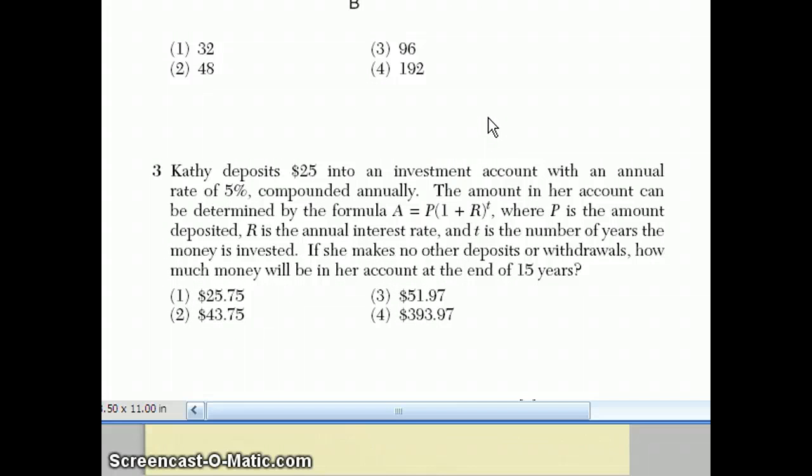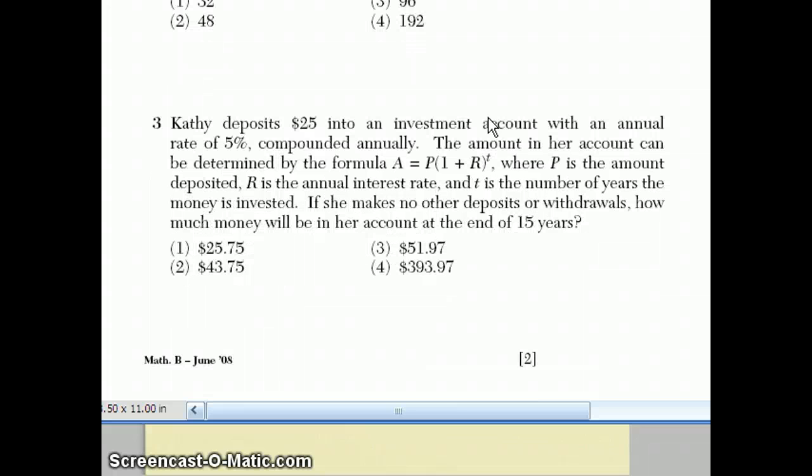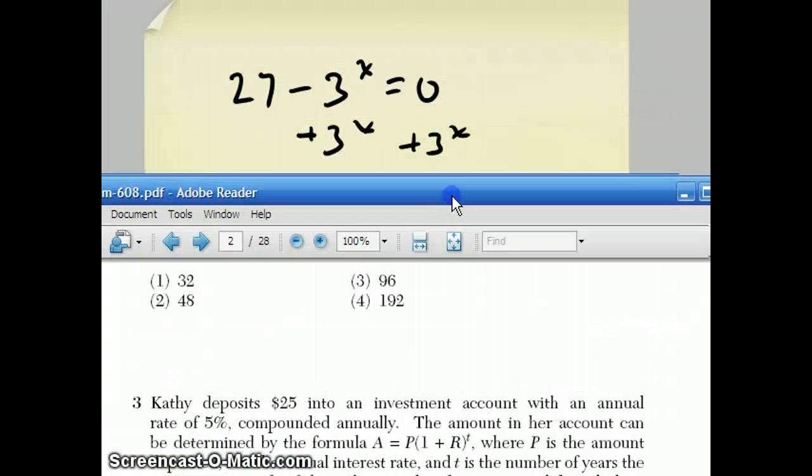Question number 3. Kathy deposits $25 into her investment account with an annual rate of 5% compounded annually. The amount in her account can be determined by the formula A = P(1 + R)^T, where P is the amount deposited, R is the annual interest rate, and T is the number of years the money is invested. So if she makes no other deposits or withdrawals, how much money will be in her account at the end of 15 years?